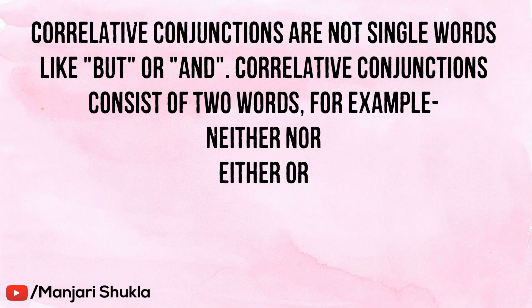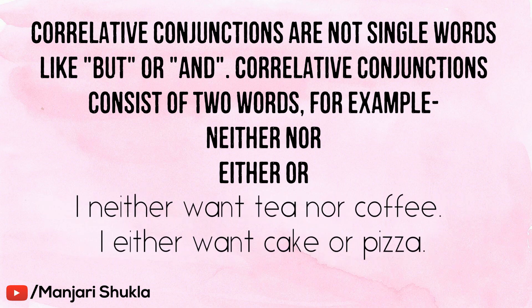Correlative conjunctions are not single words like 'but' or 'and' — they consist of two words. For example: 'neither...nor', 'either...or'. Here are example sentences: 'I neither want tea nor coffee.' 'I either want cake or pizza.' So unlike subordinating and coordinating conjunctions which are single words, correlative conjunctions have two words like 'neither nor' and 'either or'. If you see any conjunction consisting of two words, it is a correlative conjunction.